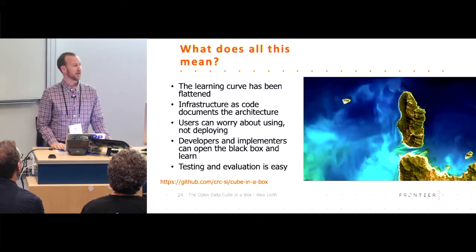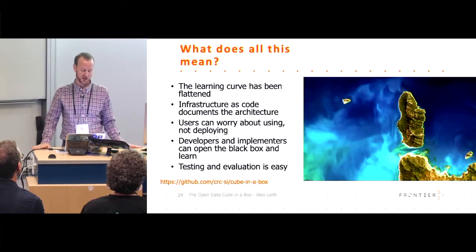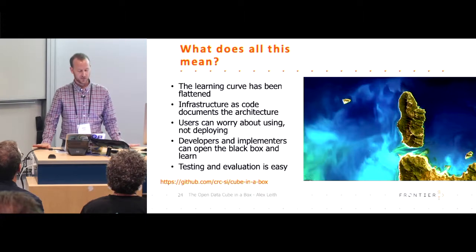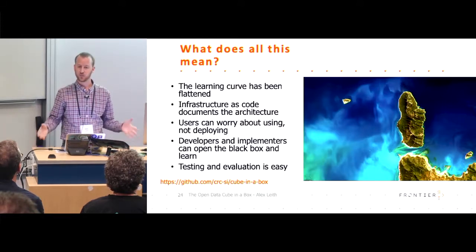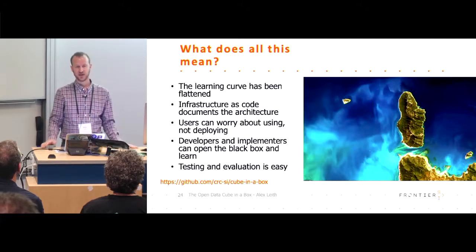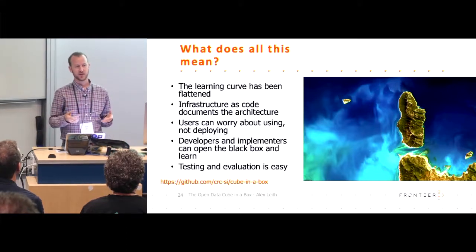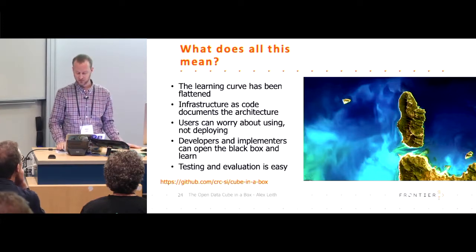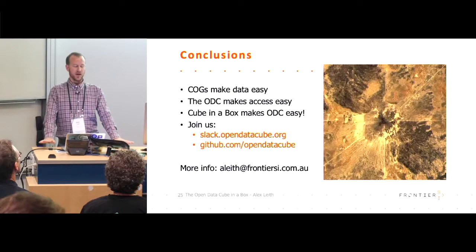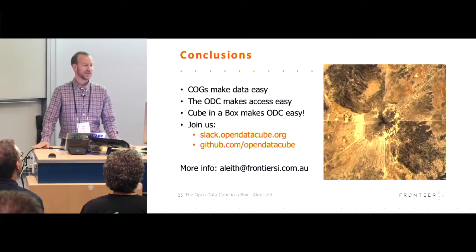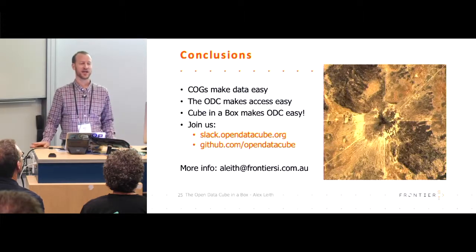In terms of outcomes, we've flattened the learning curve a little. We've got infrastructure as code which documents the architecture. We've got an environment where users can focus on using rather than deploying infrastructure. Developers and implementers can open up the black box and explore how it's done. Testing and evaluation is easy — Docker is great. If there's a bug in a point release of a library used by the Open Data Cube, we can install that specific version in Docker, test it, blow it away, install a different release and compare. In conclusion: COGs make the data easy, the Open Data Cube makes accessing that data easy, and the Cube in a Box makes the Open Data Cube easy. You can join us on Slack or GitHub.